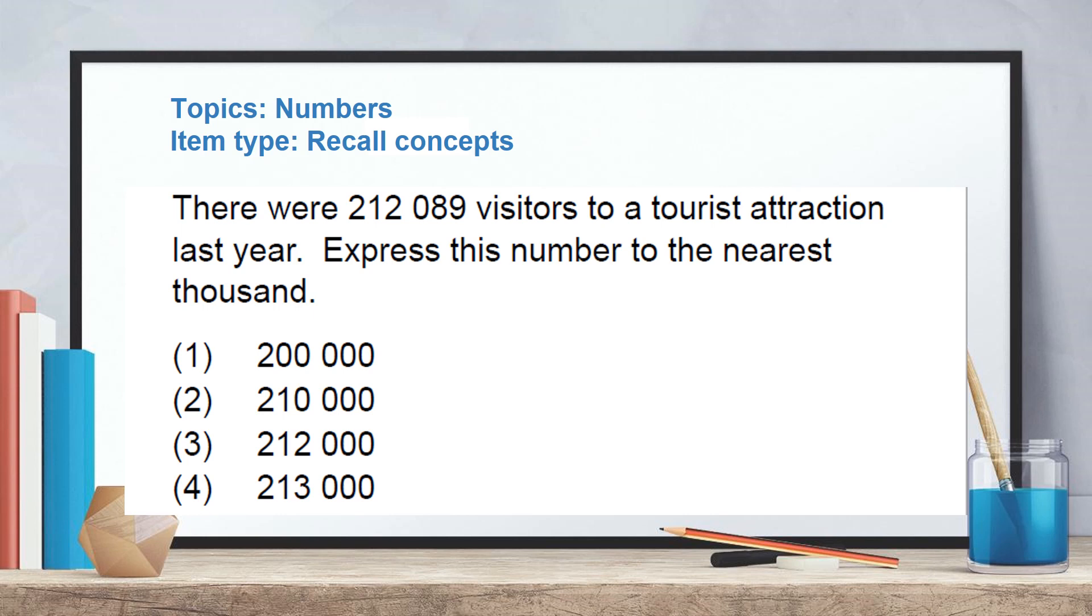Let me share a few actual examples. This question is testing the concept of numbers, and the item type is recall concepts. There were 212,089 visitors to a tourist attraction last year, express this number to the nearest thousand. So students are just expected to recall how to round numbers to the nearest thousand. Then they will immediately get the answer.